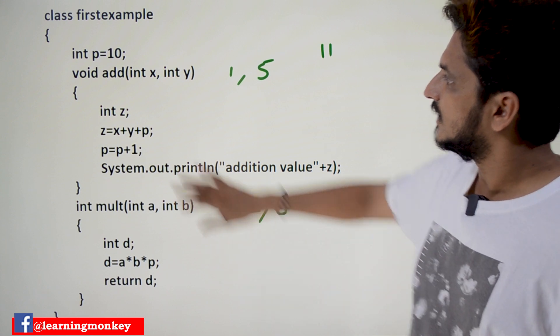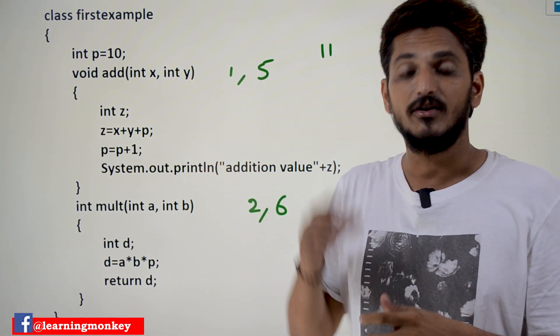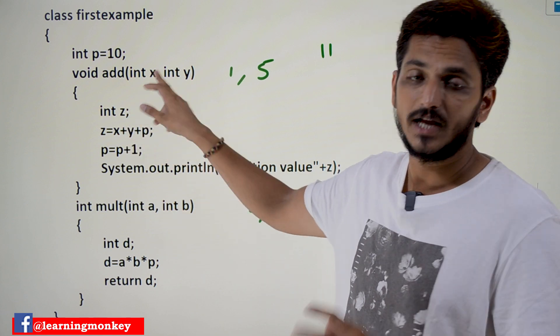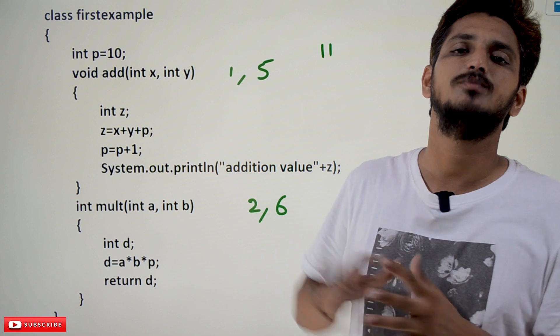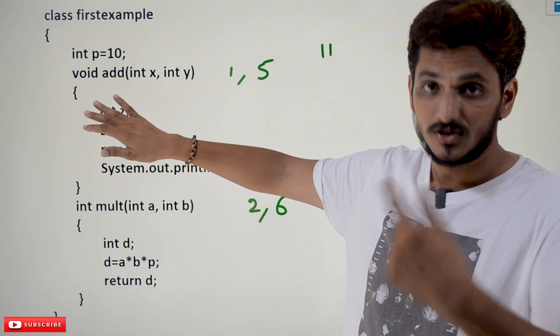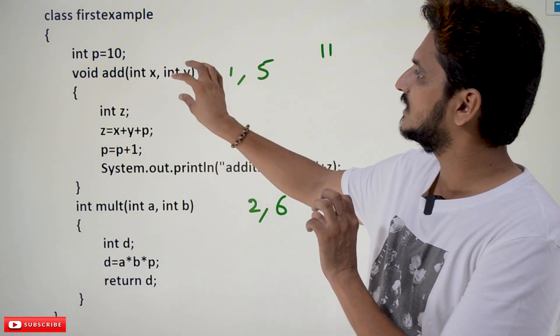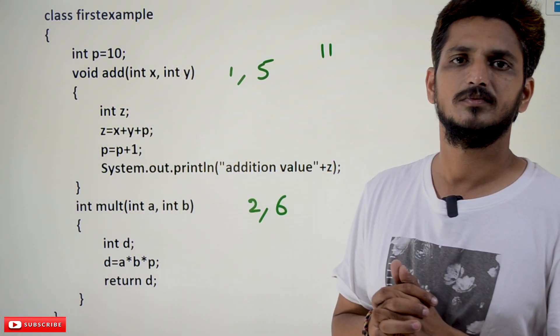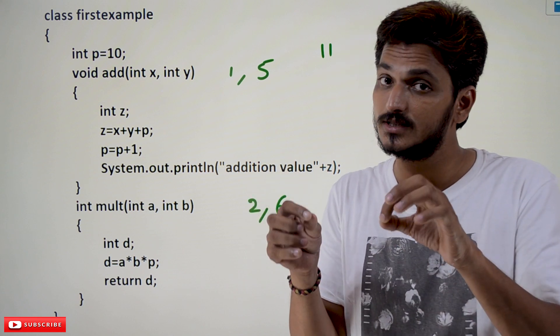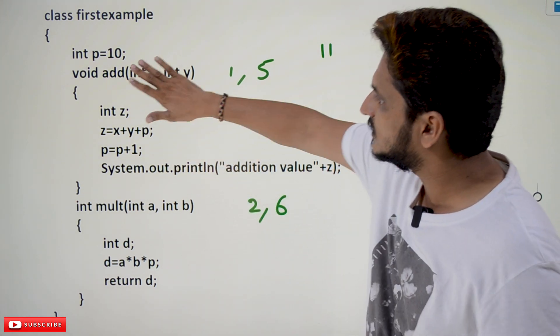See, in this class, the variables x, y, z, these variables defined inside the method. The variables that are declared in the method, we call it as local variables. These variables we can use only in this method. We cannot use outside this method. Whenever this method is going to be executed, whenever the execution is going on, we can use these variables x, y, z. Once the execution is completed, we cannot use these x, y, z values. These variables are no more. How memory is allocated to local variables and instance variables, we are going to discuss in our next class. As of now, forget about the memory allocation. You need to understand, these are the local variables.